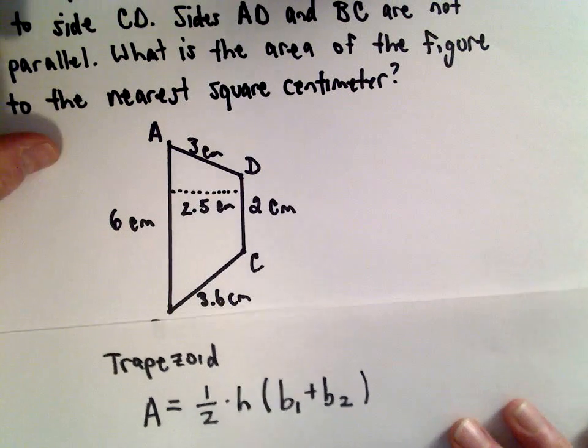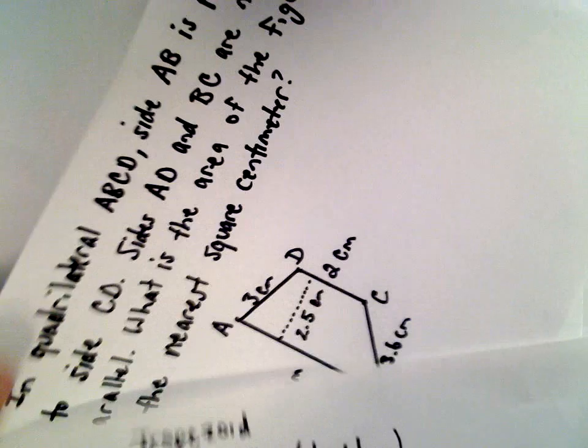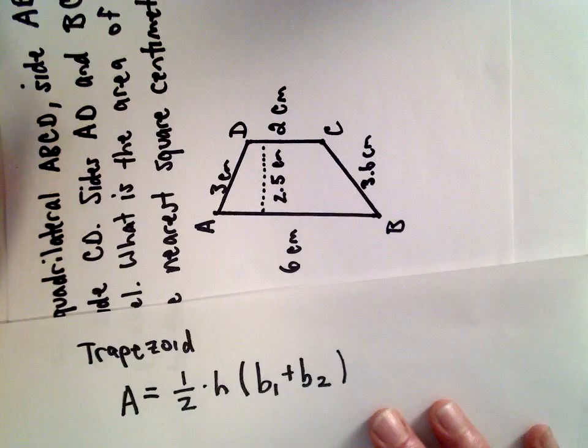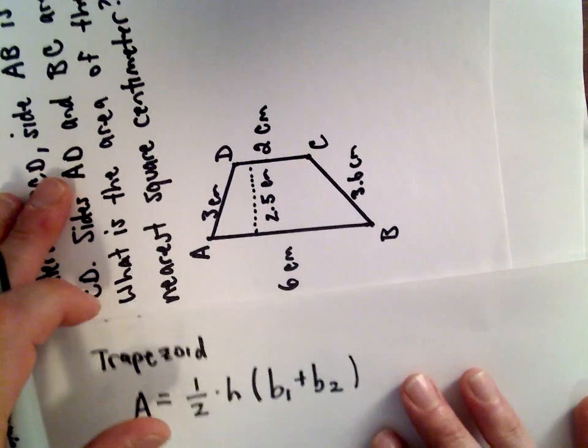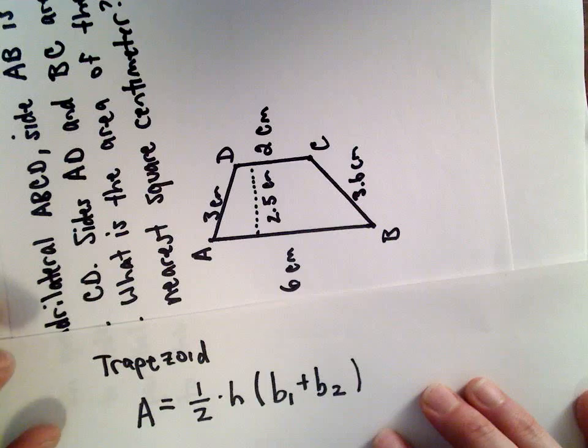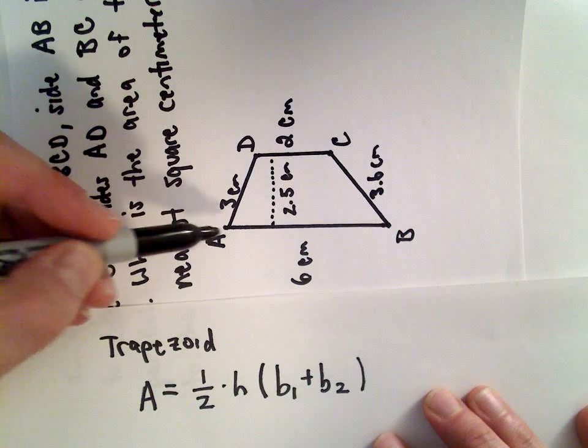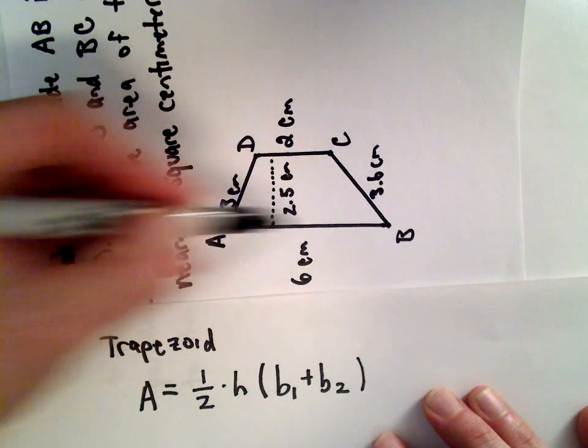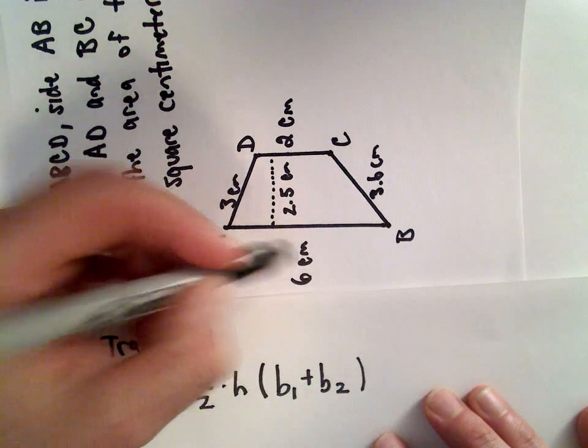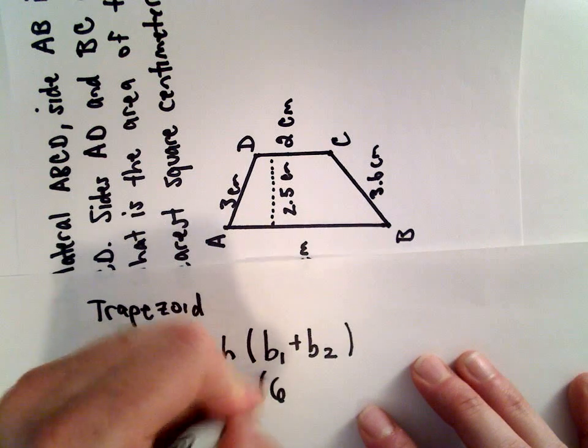So you can kind of think about this. I'm going to sort of flip my trapezoid around. The bases refer to the sides that are parallel. So the bottom base, now that I've got it twisted around, if you want to think about the bottom base, that has a length of six.